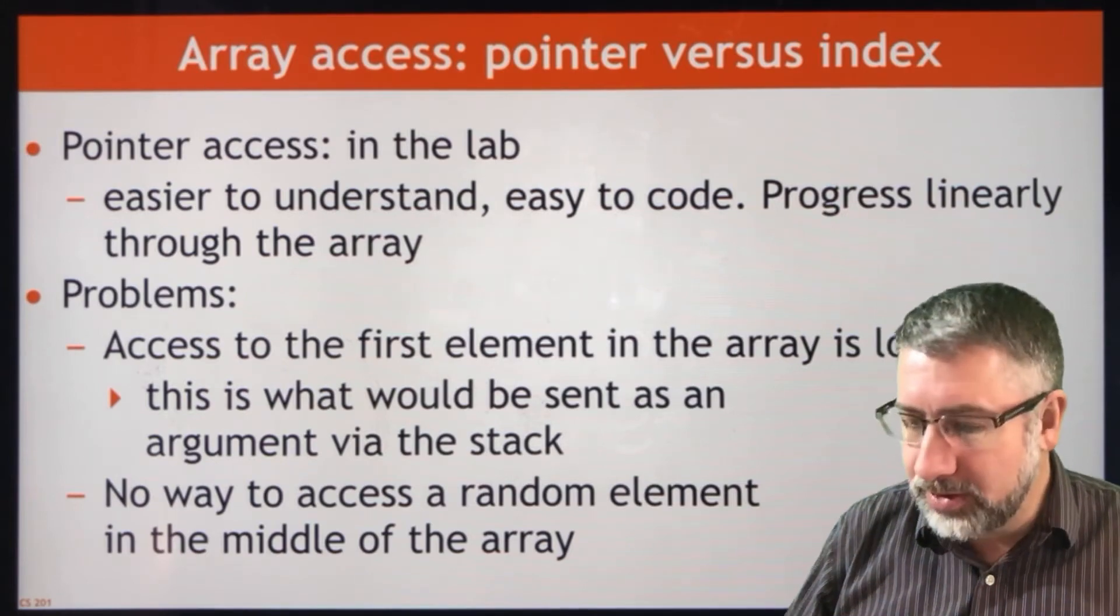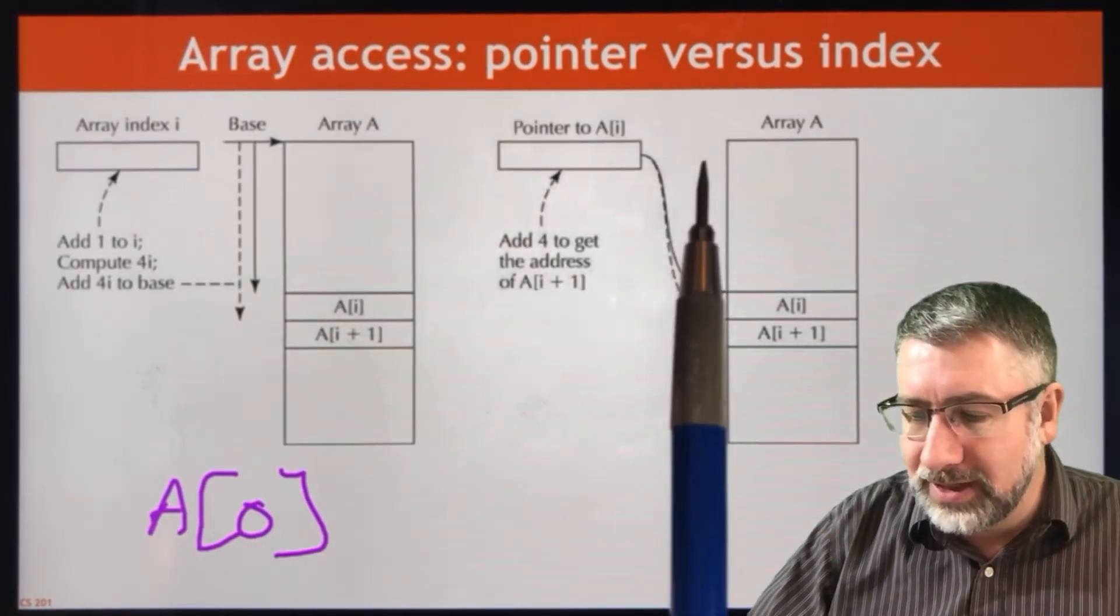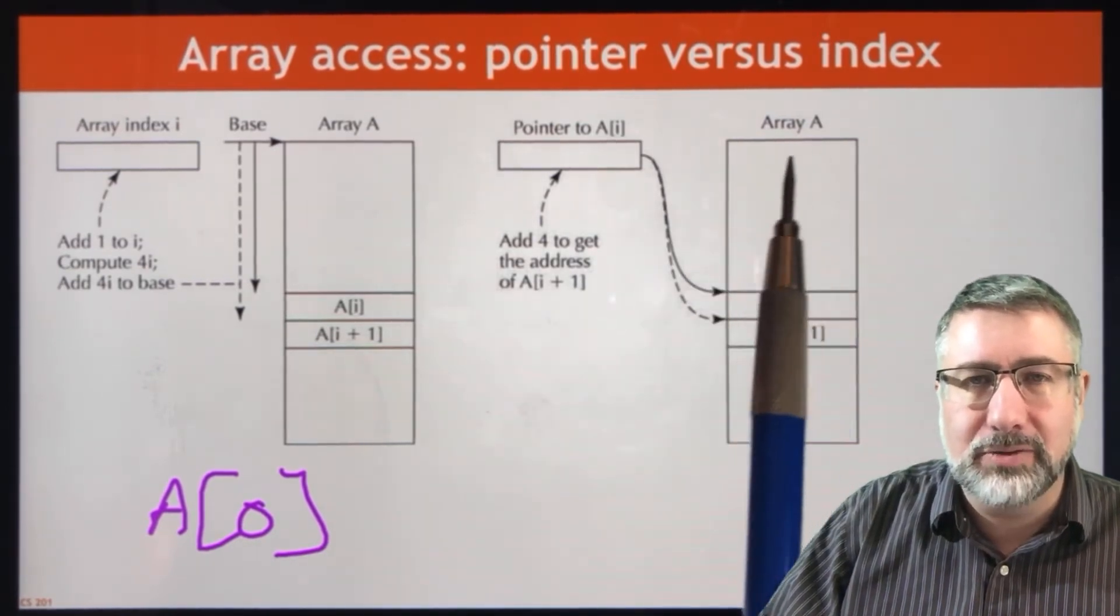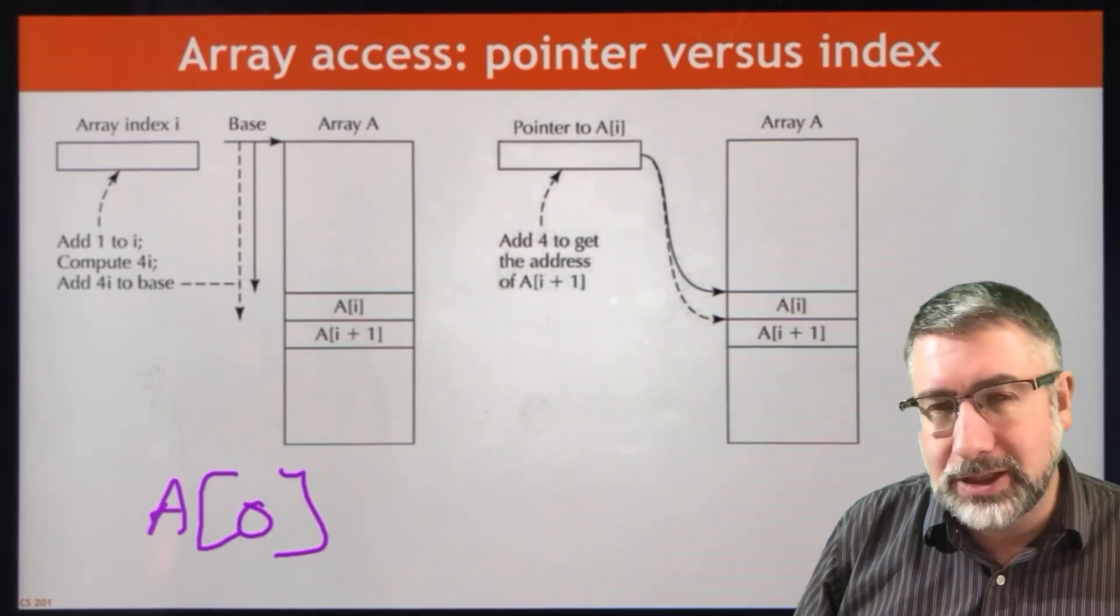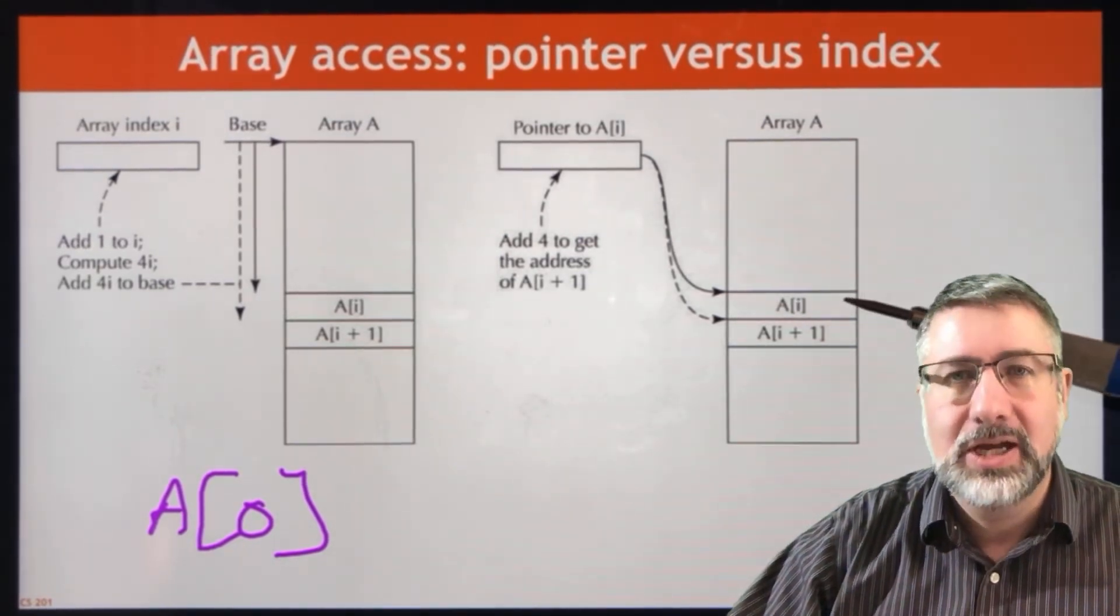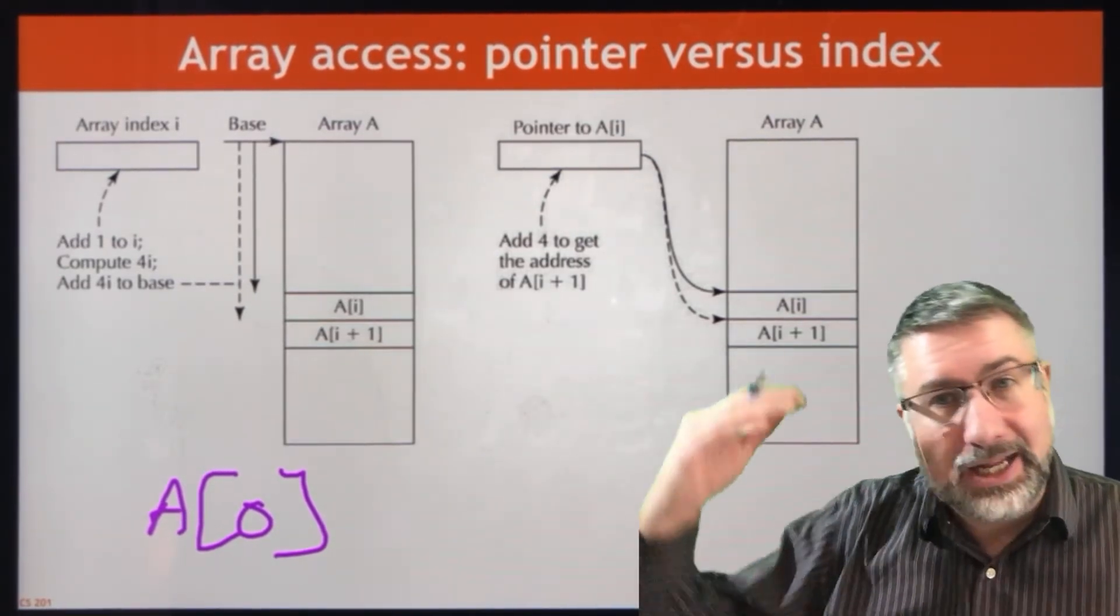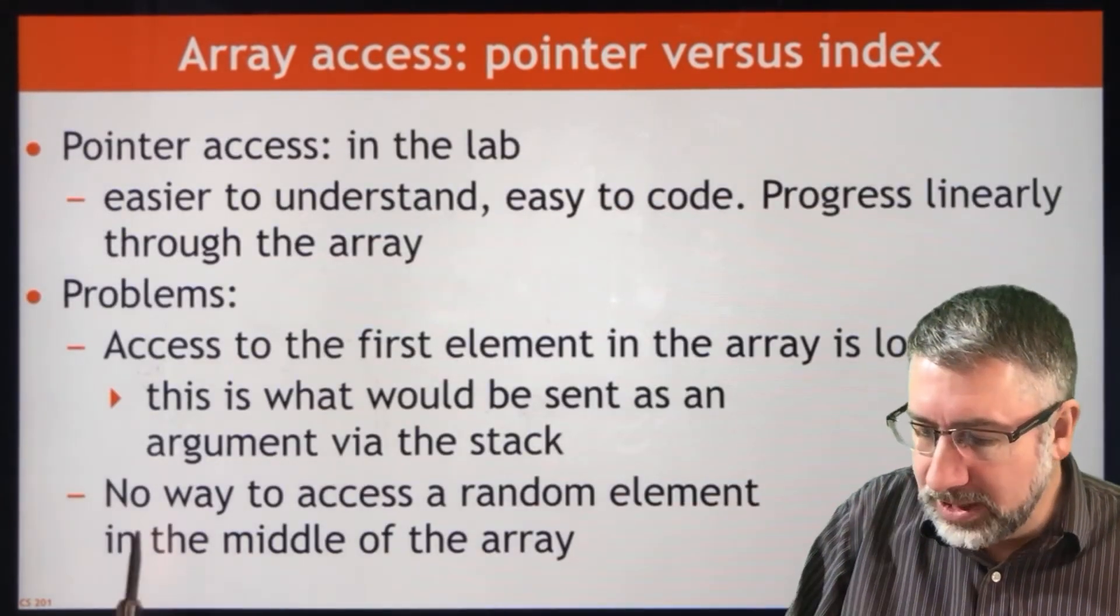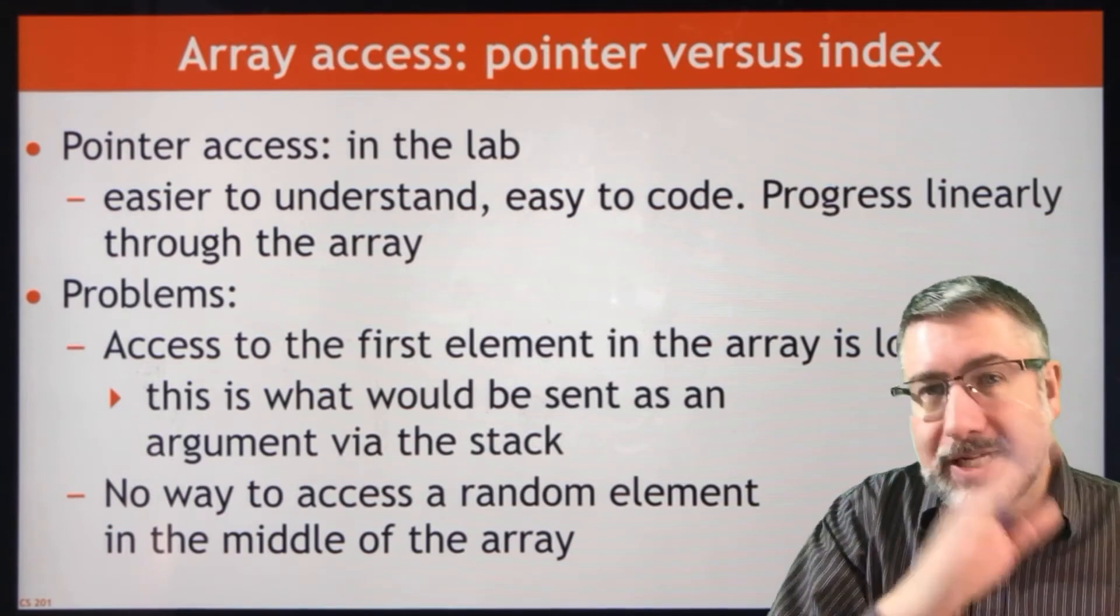The problem with the pointer access is if you're not careful, you might lose where you're at. Unless you're careful about it, maintaining access, maintaining some pointer to the first element in the array. And so you might lose where you're at. It is a little bit more difficult to access information randomly, although it can be done. You need to know relative to your current location where the next location of interest is. So if you want to jump back three elements and then jump forward seven elements, you can do that, but it's harder to keep track of. But again, if all you're doing is walking through one element at a time, it's nice and straightforward. So there's no easy way to access a random element. And access to the first element can be lost if you're not careful, but it's a good way to learn. And so that's what we do in the lab.